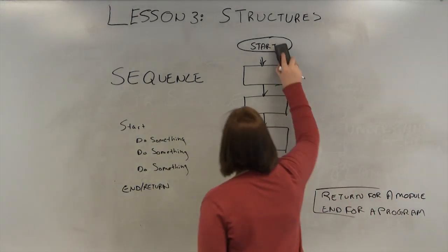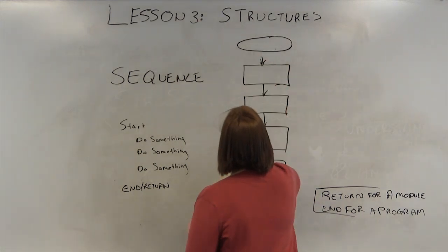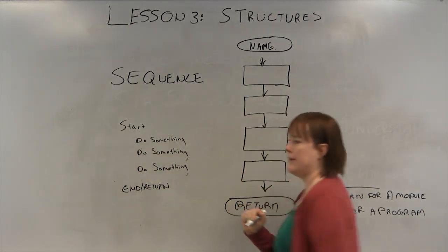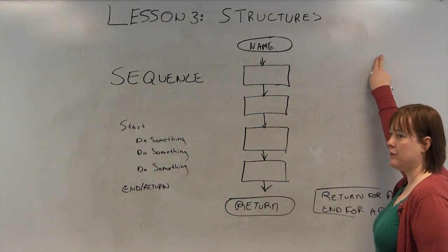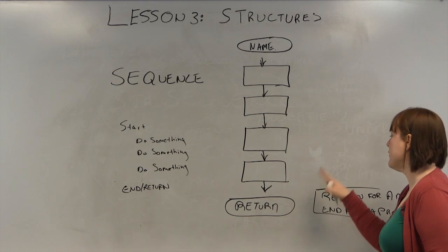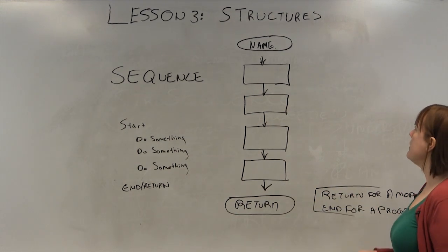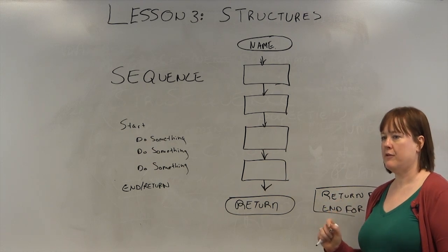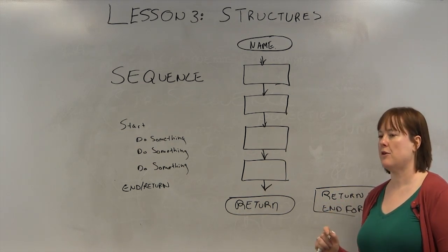You always start and end with a lozenge shape. If it was a program, you would use the program name here. If it's a module, you would use the module name here instead of just a start. So that is the sequence structure, and it is the most basic structure in programming.